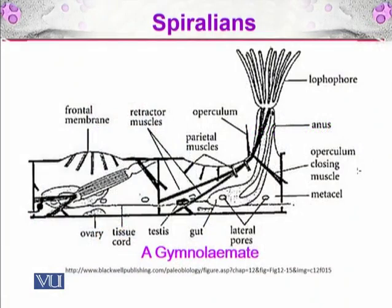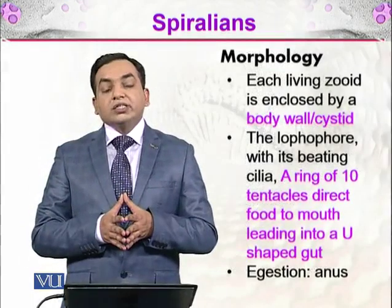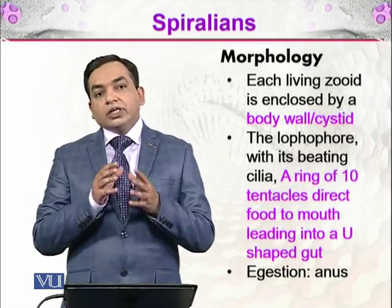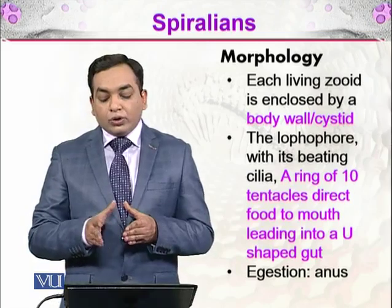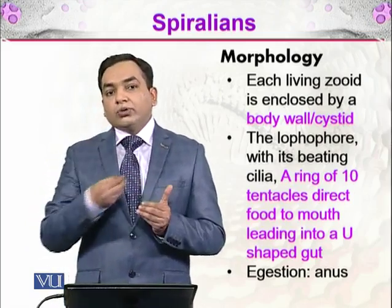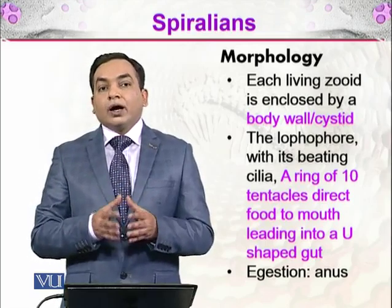Here we have a gymnolaemate, which is a class of lophophorates inside the bryozoans. On the upper right side, you can see the lophophore, which is the feeding organ, and the anus through which it expels undigested food, along with the retractor muscles. The retractor muscles are responsible for withdrawing the lophophore when the organism is not in a feeding stage. Each living zoid is enclosed by a body wall called the cystid. The lophophore has beating cilia and a ring of 10 tentacles that direct food to the mouth, leading to a U-shaped gut from the mouth to the anus.